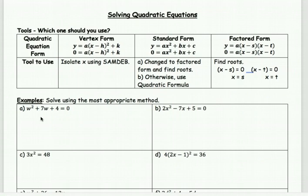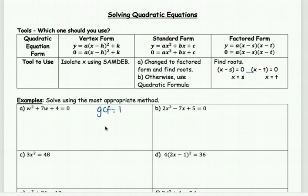Starting with the first one — I'm looking at it and noticing it's a quadratic in standard form. Whenever I see that, I'm going to try to get it to factored form and then find the roots. Go through the factoring process: always look for the greatest common factor first. There's nothing except a one, so move on to the next step.